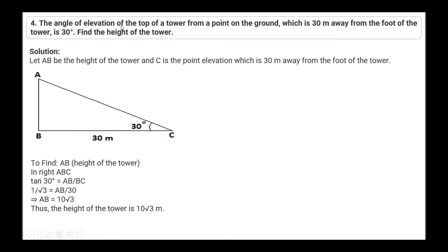Question 4: The angle of elevation of the top of a tower from a point on the ground 30 meters away from the foot of the tower is 30 degrees. Find the height of the tower. Let AB be the height of the tower and C be the point of elevation 30 meters away. In right triangle ABC: tan 30° = AB/BC, so 1/√3 = AB/30, giving AB = 10/√3 meters.